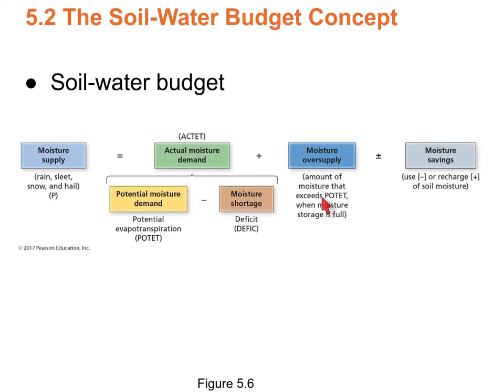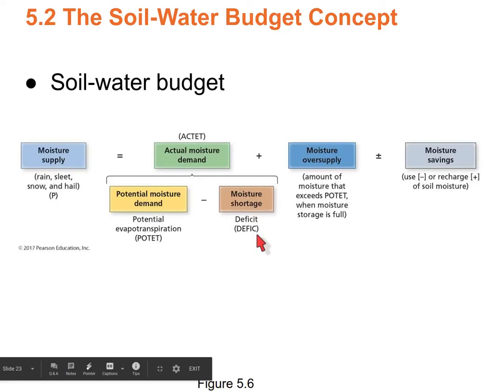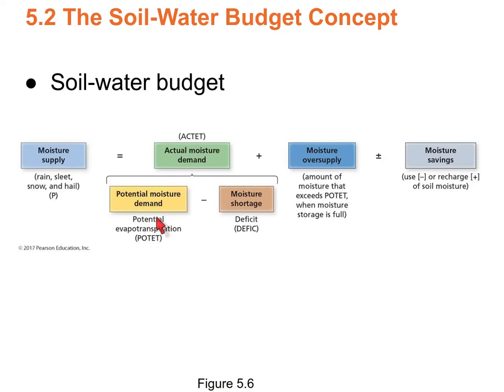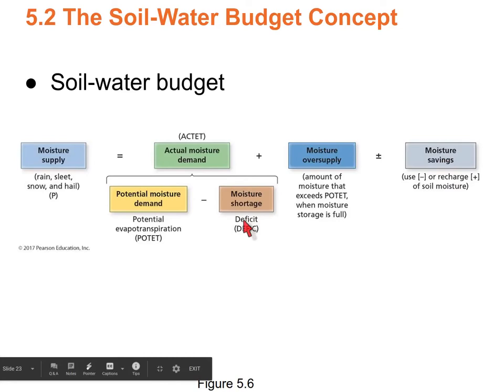If there's more rain than the soil can hold and more rain than plants can use, you're going to have runoff. Moisture shortage is a deficit — for example, if you lived in a desert, the POTET (the amount of water you need) would be greater than the supply (precip) and the storage, so you'd end up with a deficit.